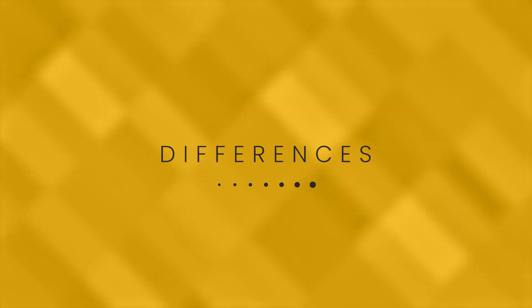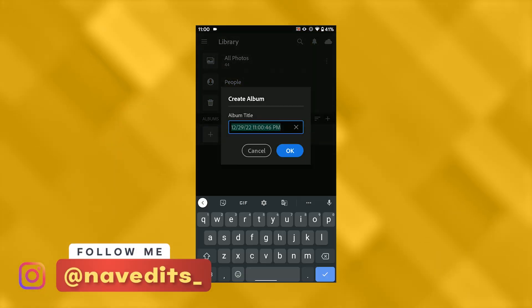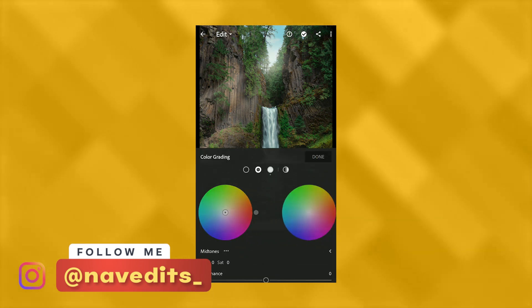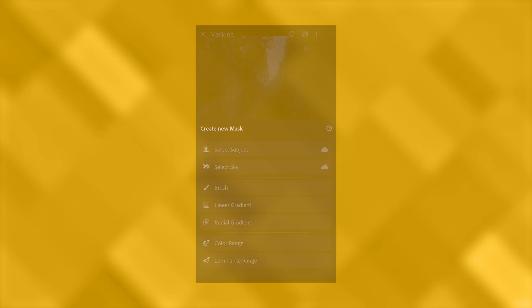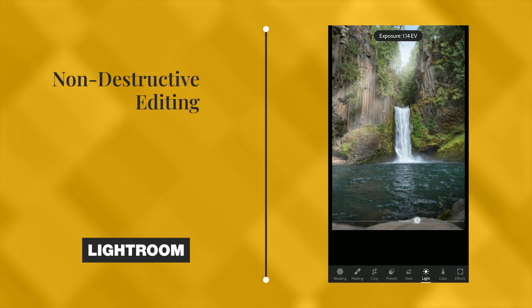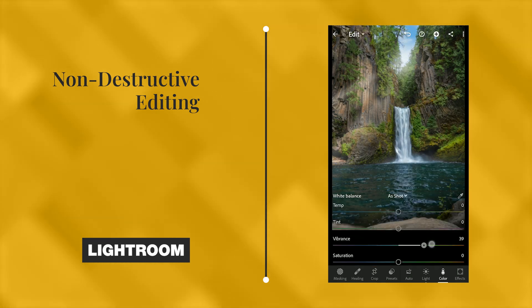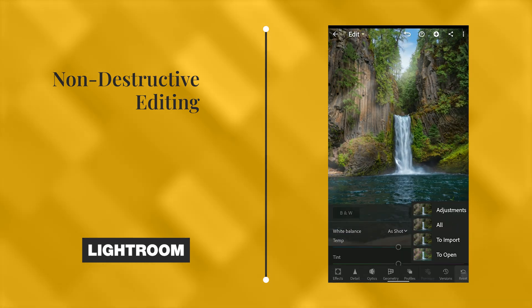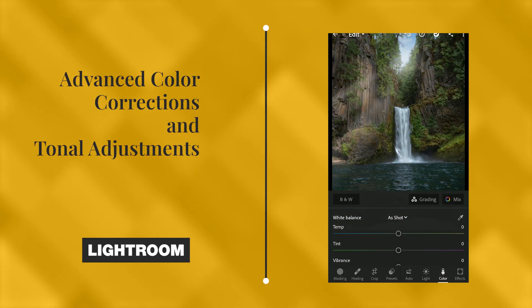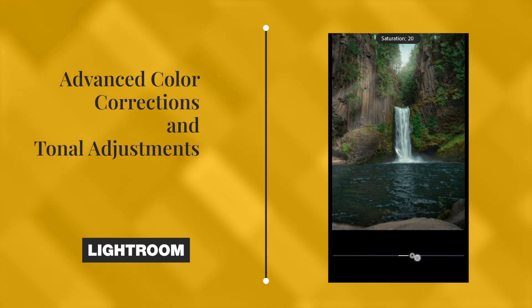There are several key differences between Adobe Lightroom and Snapseed in terms of the features they offer. Lightroom is a full-featured photo editing software that offers a wide range of tools for organizing, editing and enhancing photos. Key features include non-destructive editing — Lightroom allows you to make edits to your photos without permanently altering the original image, so you can revert back to the original at any time. It also has a range of tools for fine-tuning colors and tones, including color balance, hue, saturation and luminance adjustments.